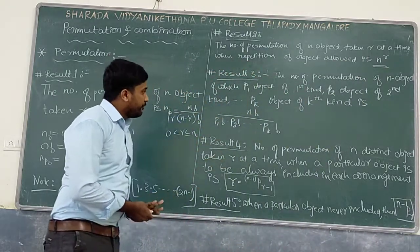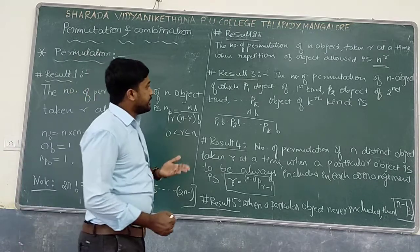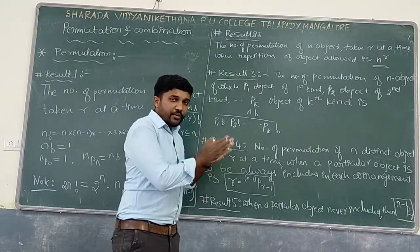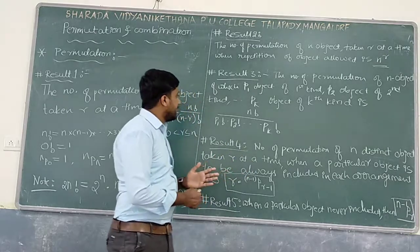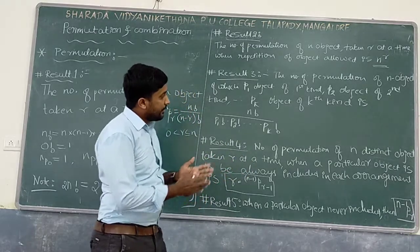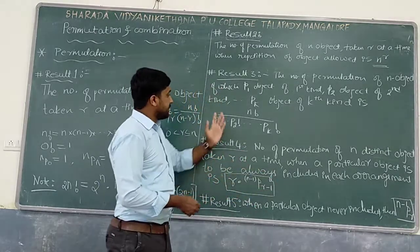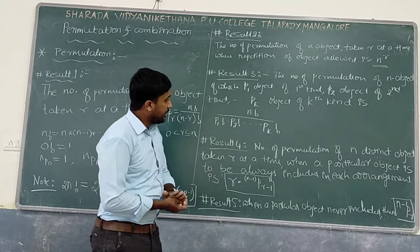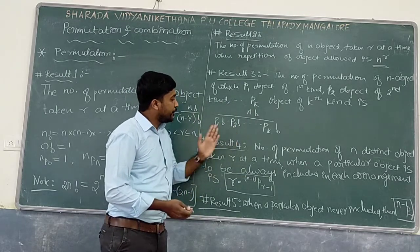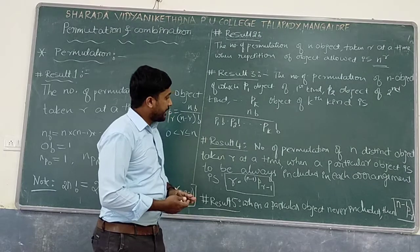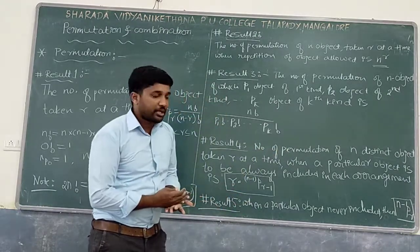Result 3: The number of permutations of n objects, of which p1 objects are of the first kind, p2 objects are of the second kind, and so on, pk objects are of the kth kind, is given by n factorial divided by (p1! × p2! × ... × pk!).